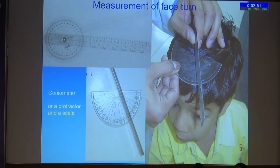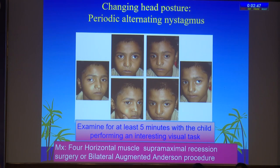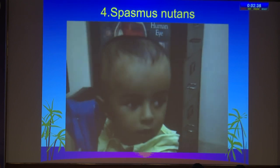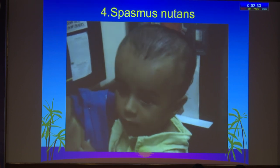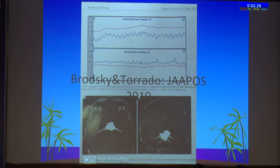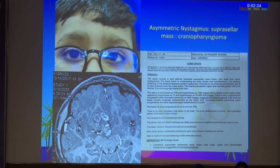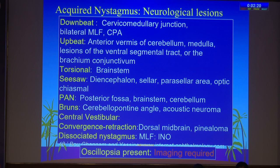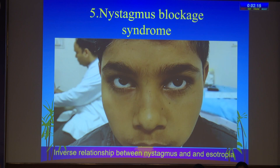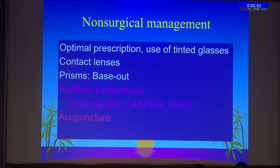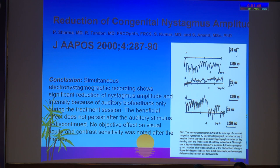If you assess binocular visual acuity and find it much better, you need to reassess monocular vision after not just covering with an occluder but with a plus 4 diopter lens in front of the other eye. If there is a face turn, measure it with a protractor or the protractor app on your smartphone. Always watch for periodic alternate nystagmus, which means you have to examine the child for a consistent 5 minutes. Spasmus nutans you will pick up when a child has torticollis with a head turn and a disjugate nystagmus. If there is unilateral or asymmetric nystagmus, keep spasmus nutans in mind — do imaging and you will pick up life-saving conditions.